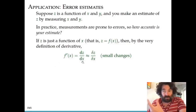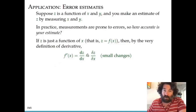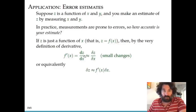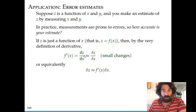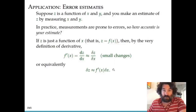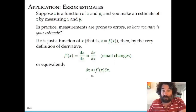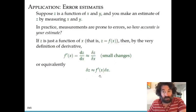In fact, when you take the limit as delta x goes to 0, this equality becomes exact, not just an approximation. And so this is the same linear approximation we discussed in the previous video: the small change in z is approximately the derivative of z with respect to x, or f prime of x, times the change in x.